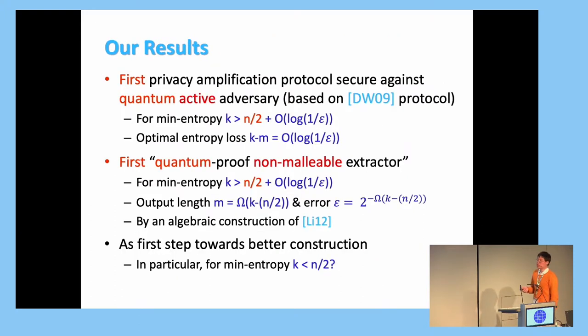And our result is we construct the first privacy amplification protocol secure against quantum active adversary. And this is done by running Dodis-Wichs and constructing the first quantum-proof non-malleable extractor. And I guess the weak point of our protocol is that we have a really high min-entropy requirement. The amount of min-entropy needs to be bigger than n over 2 bits.